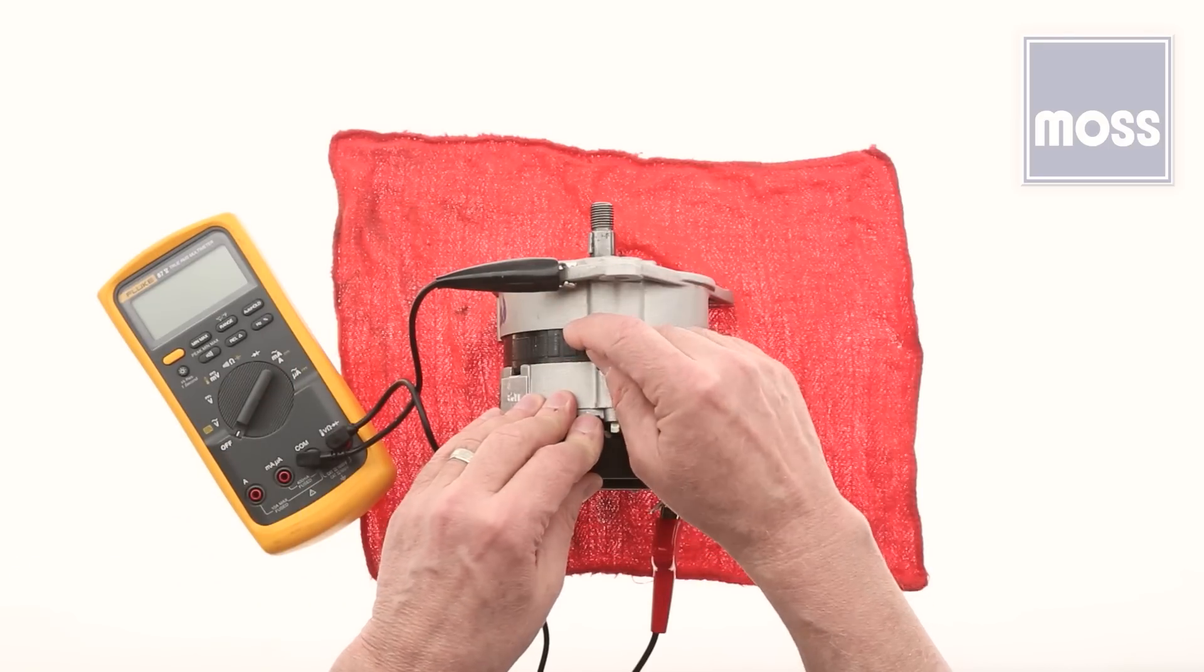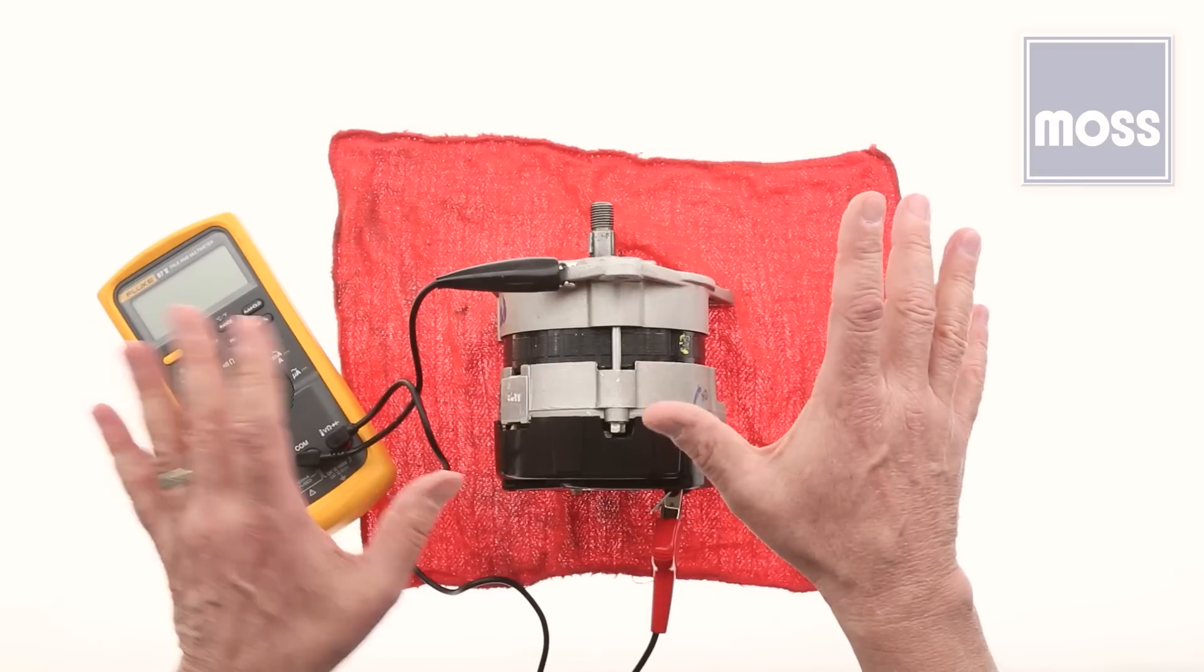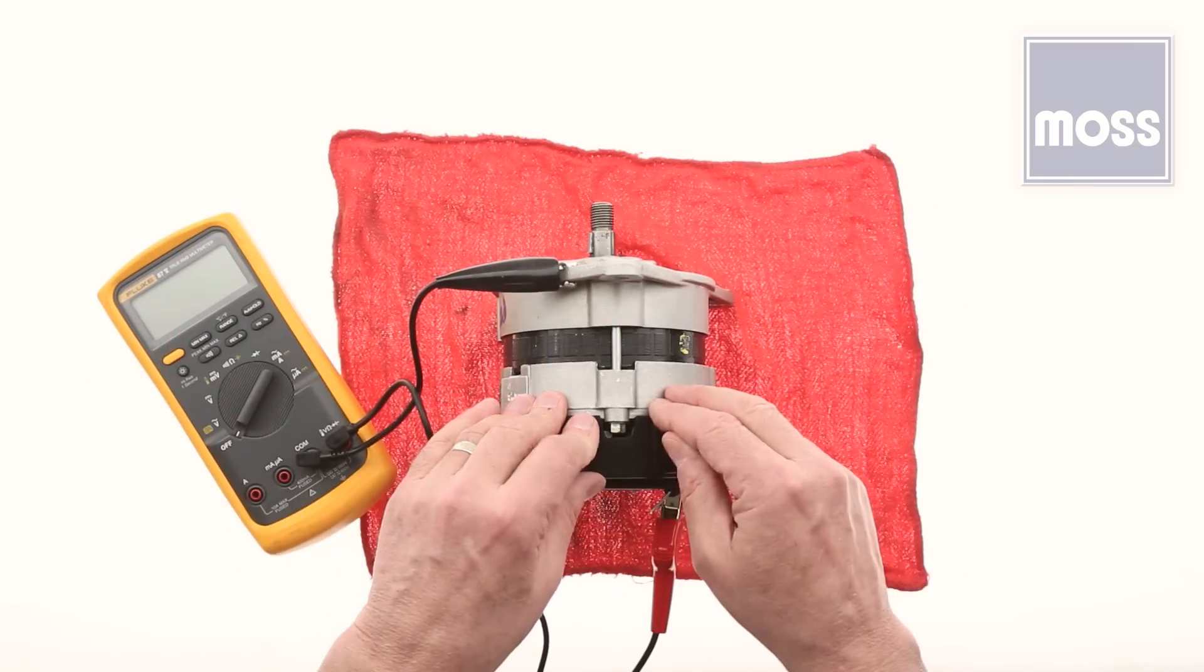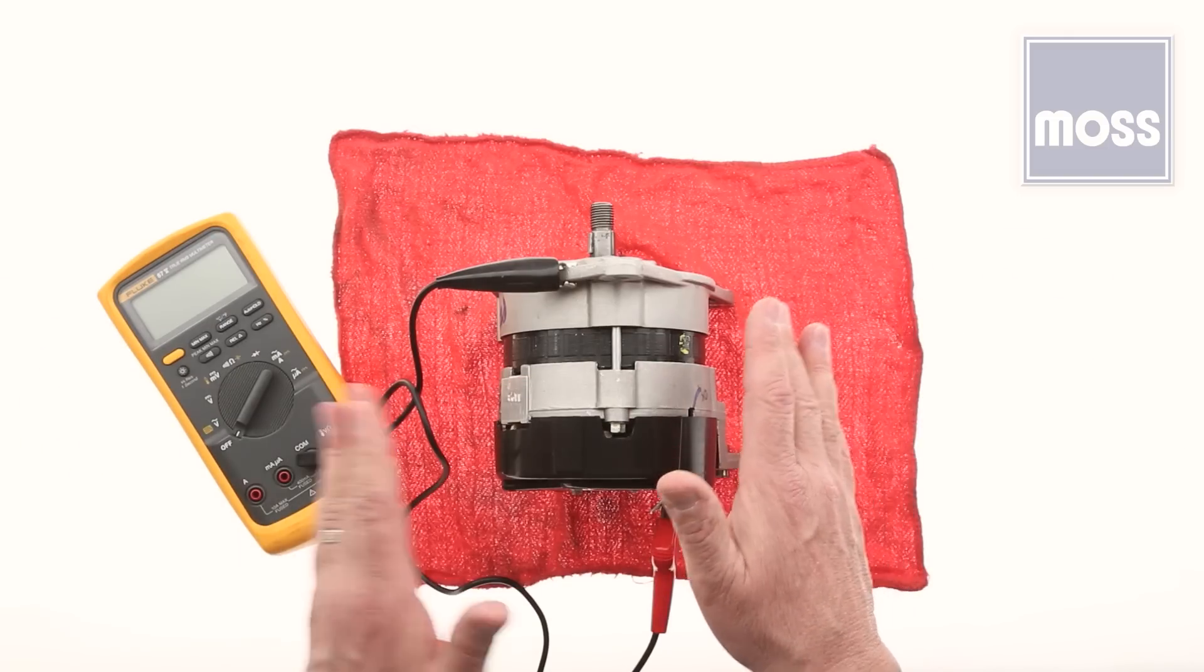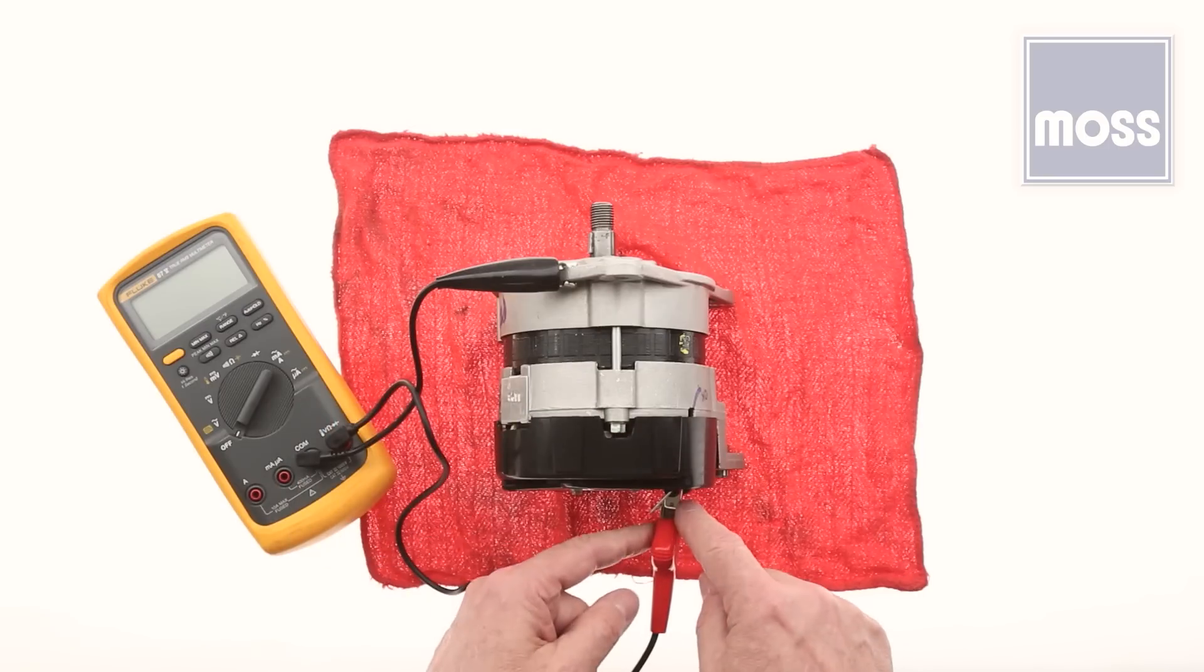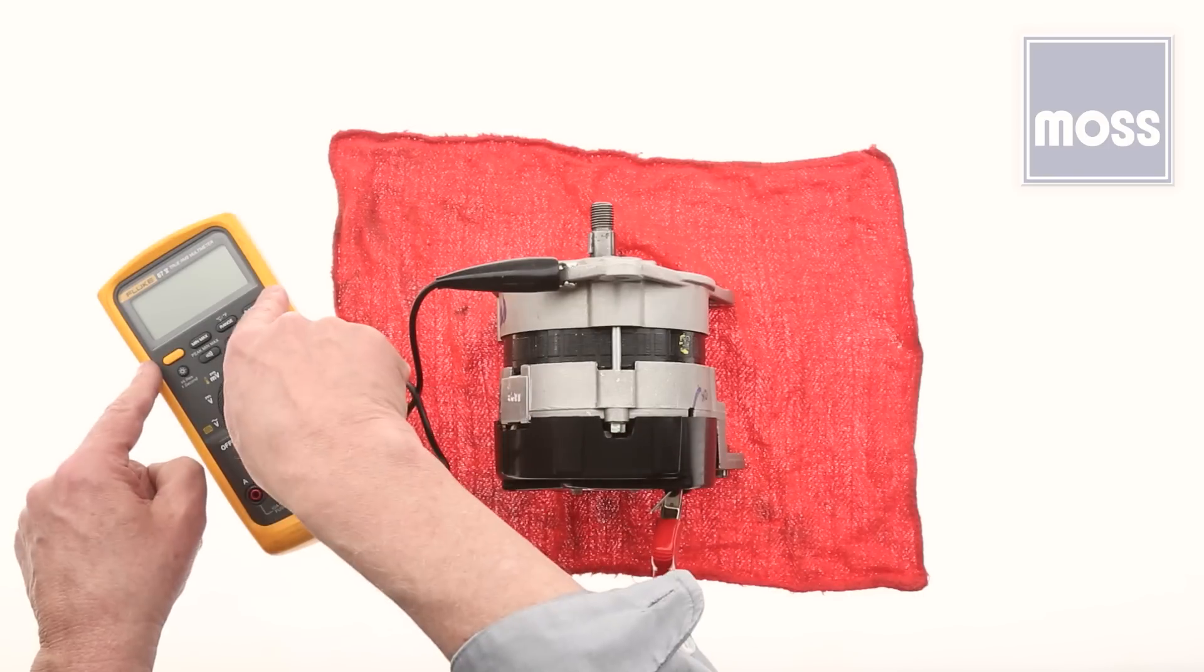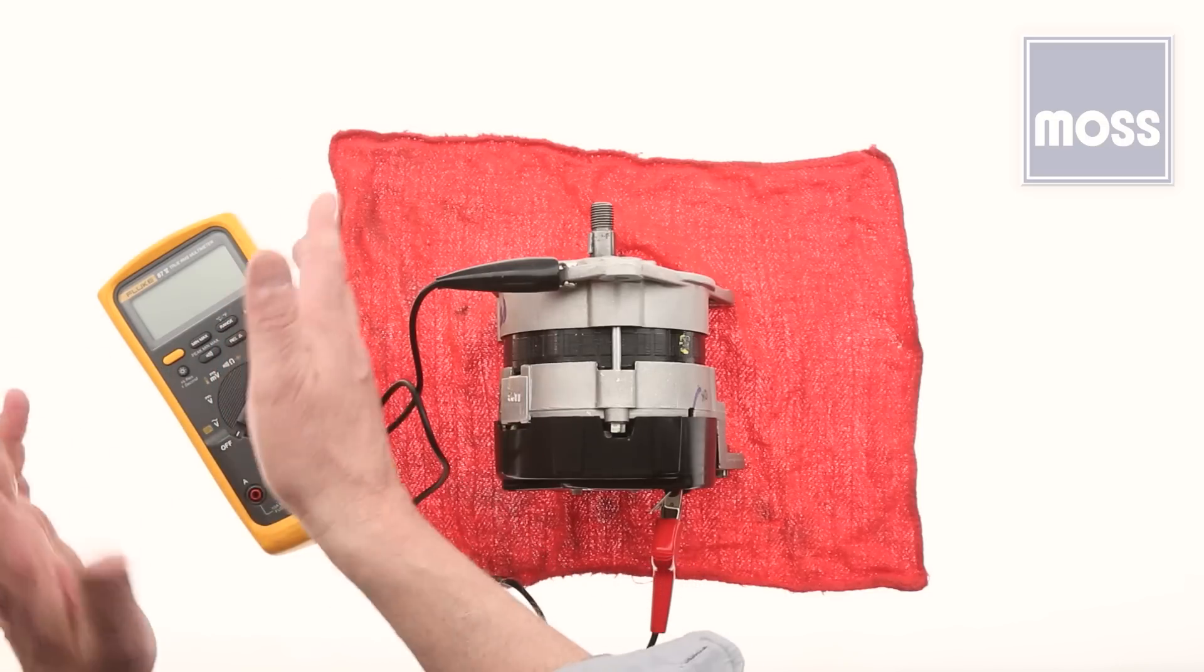By connecting to the case of the alternator, we're measuring what's going on right here. Nothing else in the car is involved. The ground is here, the power is here. This is going to tell us what's really going on. That's it, two wires. Because your alternator is directly connected to your battery, as soon as you put these leads on, you're going to see battery voltage on your meter. It should be around 12 and a half volts.